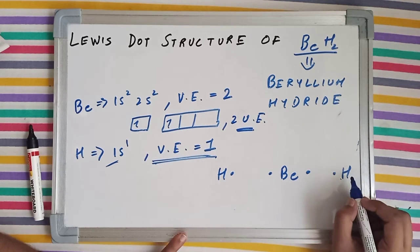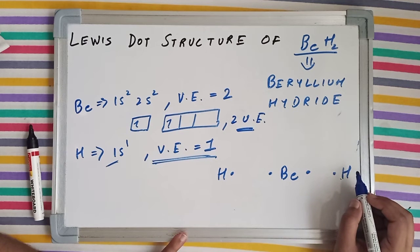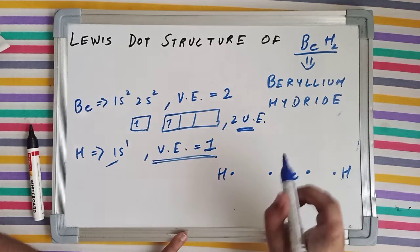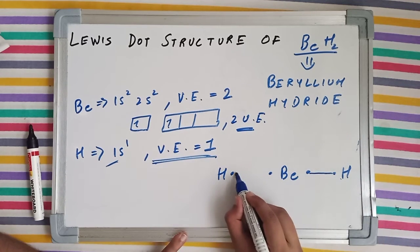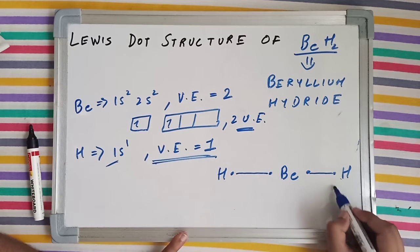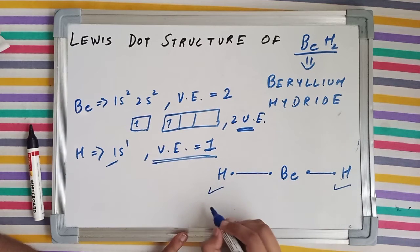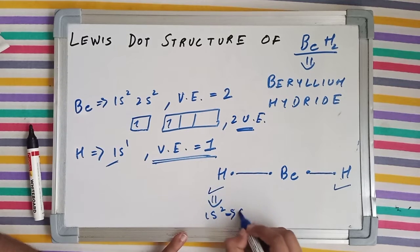Hydrogen wants to complete its duplet and wants to gain 1s² stable electronic configuration after bond formation. Always remember, after bond formation. Here will be a single bond. Similarly, here also. And now hydrogen has completed its duplet and has gained 1s², which is stable.